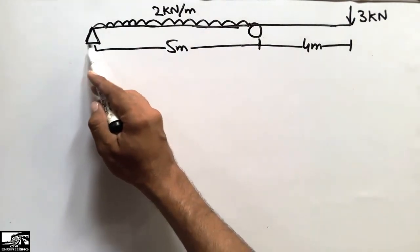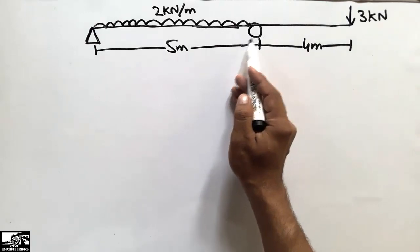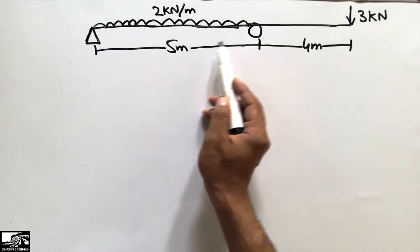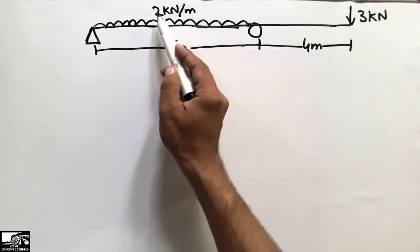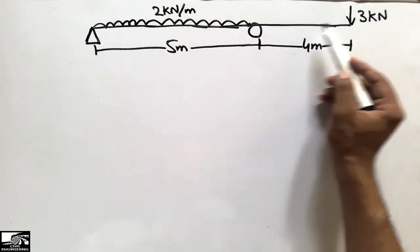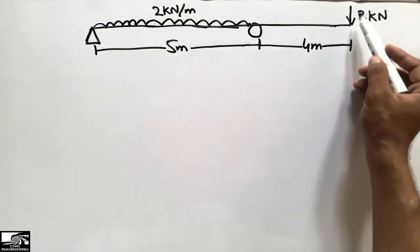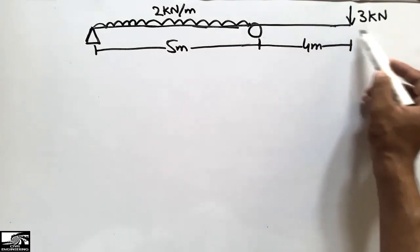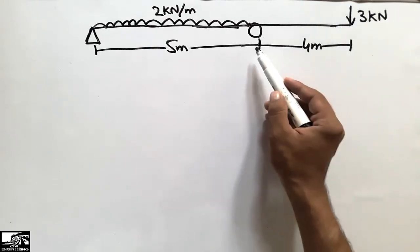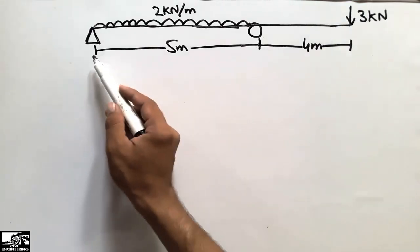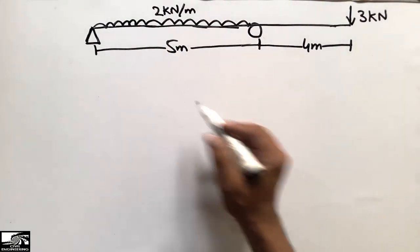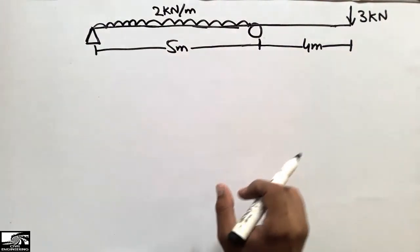The problem has two supports: one is a hinge and one is a roller. A uniformly distributed load acts on the left side of the beam at two kilonewtons per meter throughout a five meter length. On the right side, like a cantilever, there is a concentrated load of three kilonewtons at a distance of nine meters from the left support.